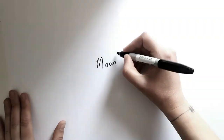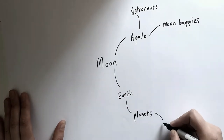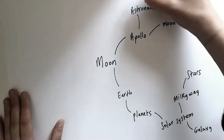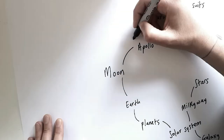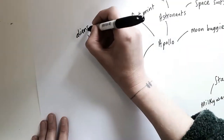Step 1: Mind map the theme moon. Write down everything that comes to mind when you think of the moon. Make connections between the words. You could make a visual mind map using illustrations instead of words, combined with collage.